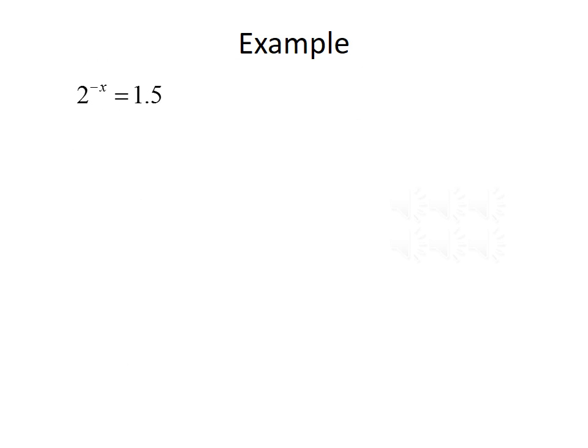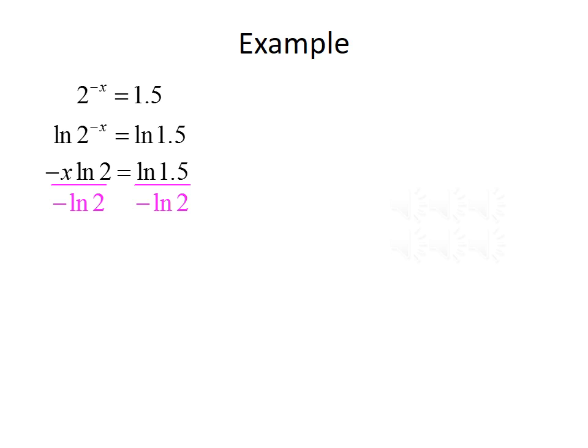Here's another example: 2 to the negative x equals 1.5. Again, there's no way to rewrite both sides using the same base, so we take the natural log of both sides: ln(2^(−x)) equals ln(1.5). We use the power property to bring the exponent down: negative x times ln(2) equals ln(1.5). Dividing both sides by negative ln(2) gives x equals ln(1.5) divided by negative ln(2), which is approximately negative 0.585.